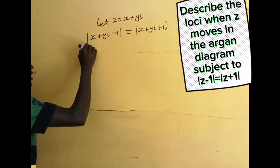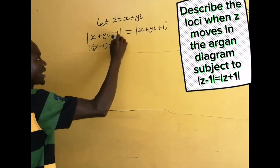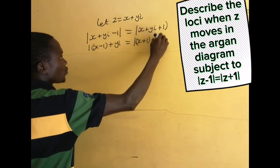Now, let us group the real parts. We have |x - 1 + yi| = |x + 1 + yi|.